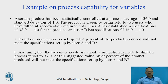Let us take one example to understand the relationship between the tolerance limit (specification limit) and Six Sigma Dash. A certain product has been statistically controlled at a process average of 36 and standard deviation of 1. The product is being sold to two users with different specification requirements. User A has specifications of 38 ± 4, and User B has specifications of 36 ± 4. Based on the present process setup, what percent of product produced will not meet the specifications set by User A and User B?